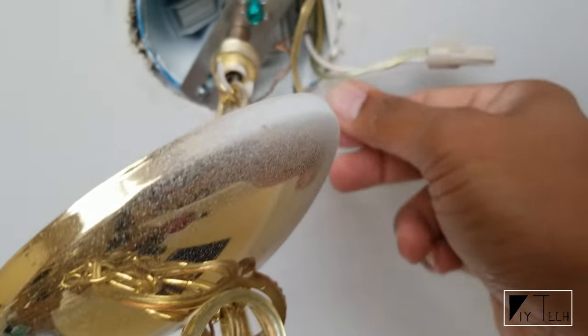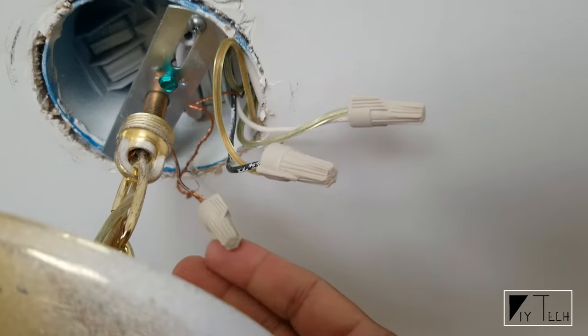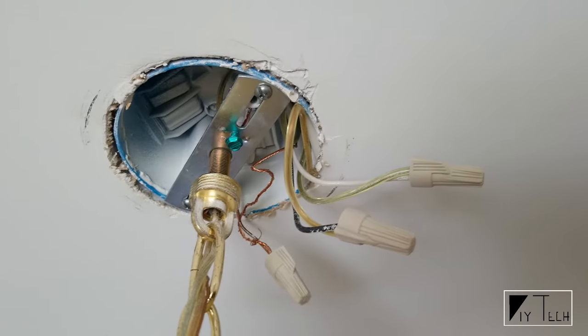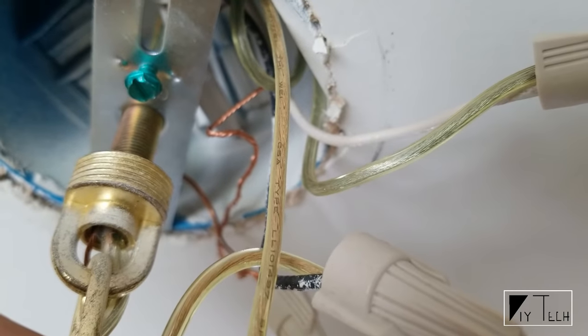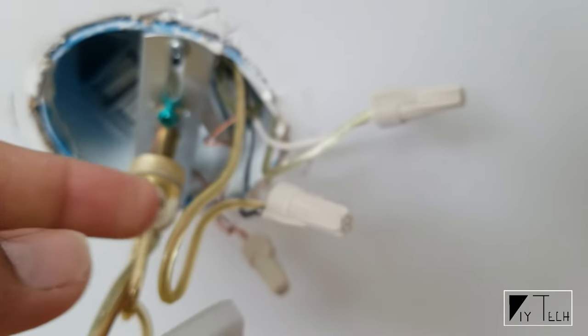So the bare copper wire with no insulation is ground, black wire is hot and white is neutral. If you look at the wiring from the light fixture you can see one is copper and one is white. So the copper one obviously goes to the hot and white goes to the neutral.